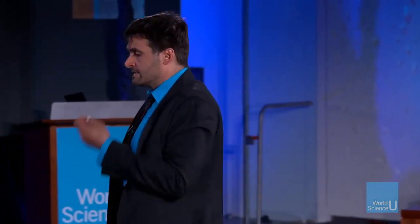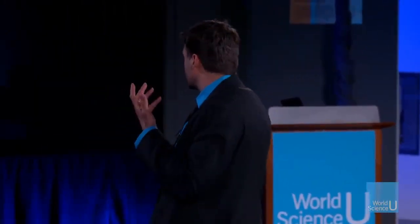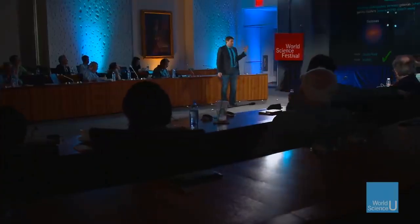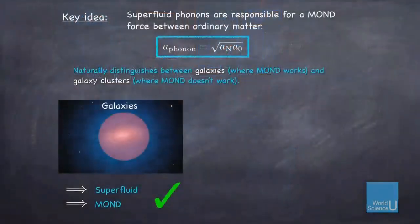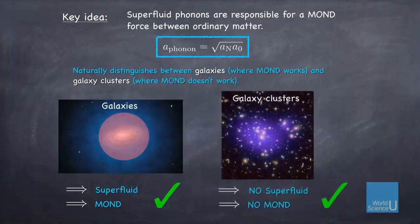It naturally distinguishes between galaxies and galaxy clusters. Galaxies are very cold, and therefore they will have a superfluid, and therefore you'll expect to have MOND behavior. This explains the beautiful fits of rotation curves and the Tully-Fisher conspiracy — it comes about because of the superfluid nature of dark matter. Whereas in galaxy clusters, they're much hotter, there is no superfluid phase, and therefore no MOND.